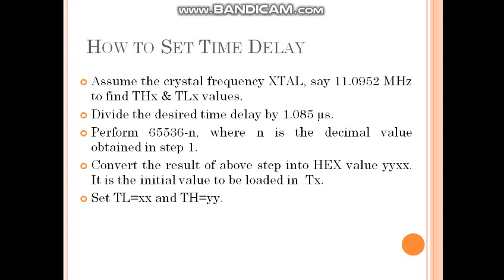For that purpose, divide the desired time delay by 1.085 microseconds. Then perform 65536 minus N, where N is the decimal value obtained in step 1. Convert that result to a hex value of the form YYYXXX. This is the initial value to be loaded into THTX, where TL equals double-X and TH equals double-Y.